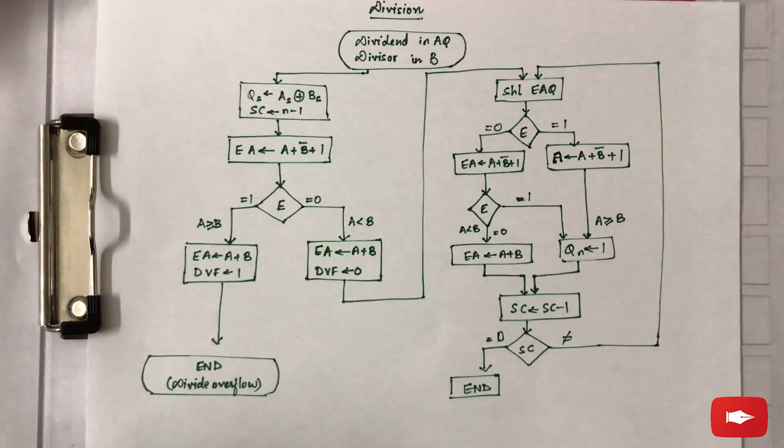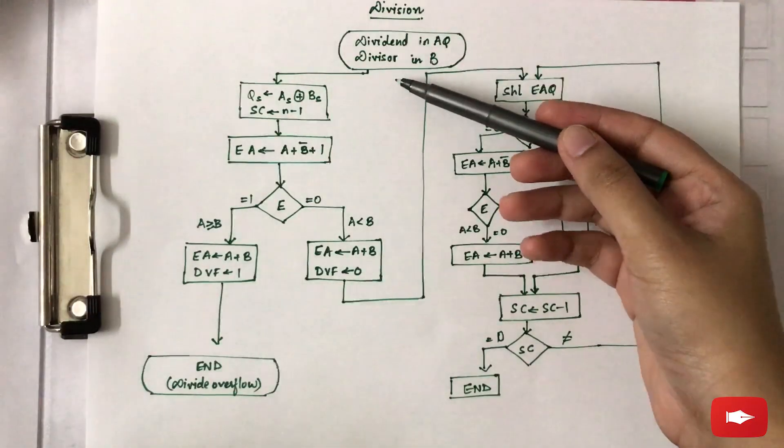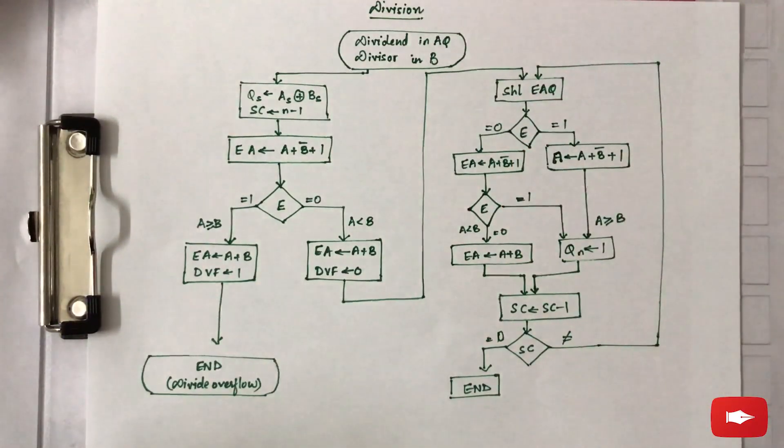The topic for this video is division. As you all know, for division we require two things: dividend and divisor. While performing division using pen and paper, there might not be a problem that would occur.